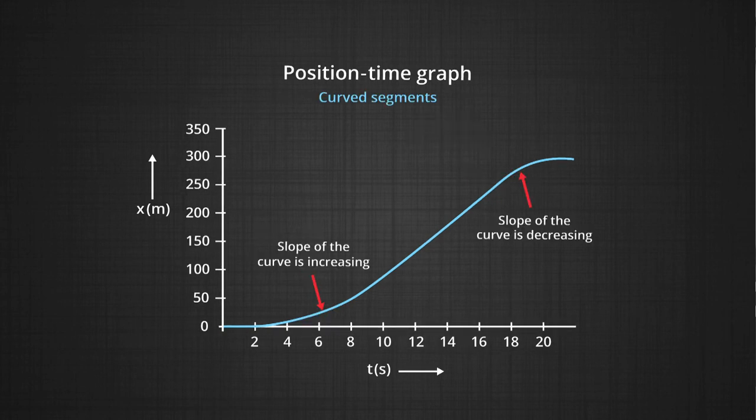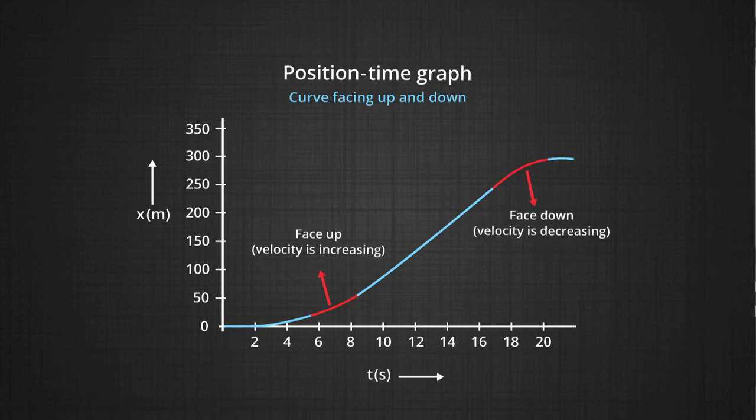Slope increasing and slope decreasing on a curved position time graph are indicative of velocity increasing or decreasing. So at a glance from a position time graph you can predict whether the object is moving with constant velocity, increasing velocity, or decreasing velocity.